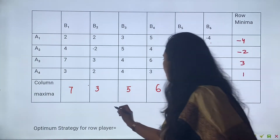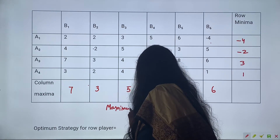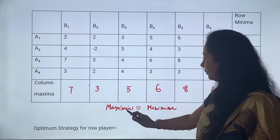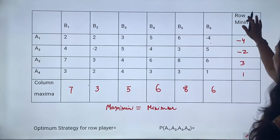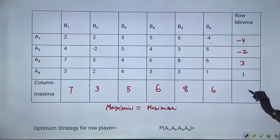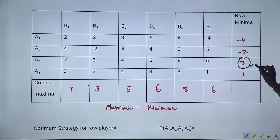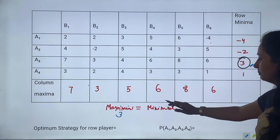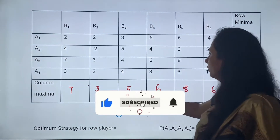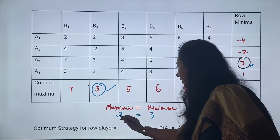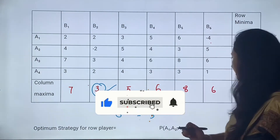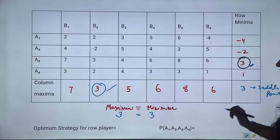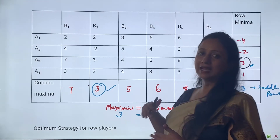What is saddle point? Maximin equals minimax. That means row minimum की maximum value - जो है वो 3 है। Row minimum की maximum value हो गई हमारी 3. Next, column maximum की minimum value है हमारी 3. ये दोनों value same आ गई है, that means 3 is a saddle point. जब ये दोनों value same आ जाती है, वही हमारा saddle point है।